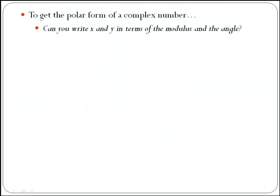To get the polar form of a complex number, just think about, can you write x and y, which are the Cartesian coordinates, in terms of the modulus and the angle? Trigonometric ratios will help you with that.